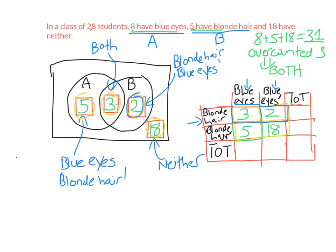Looking at the totals: 3 plus 5 is 8 for the blue eyes column, and 2 plus 18 is 20 for the not-blue-eyes column. The rows also add up correctly — 8 plus 20 equals 28 total. So I've displayed the same information in both a two-way table and a Venn diagram; they do exactly the same thing.